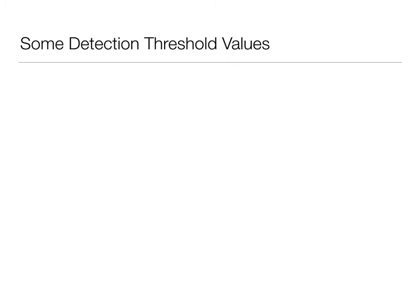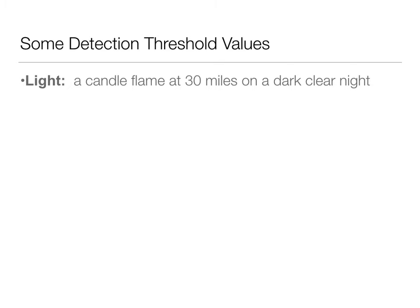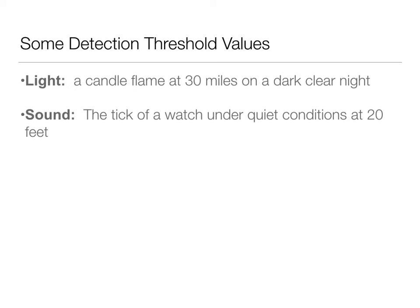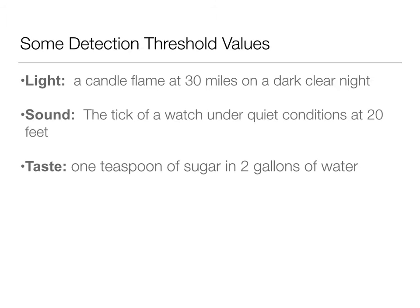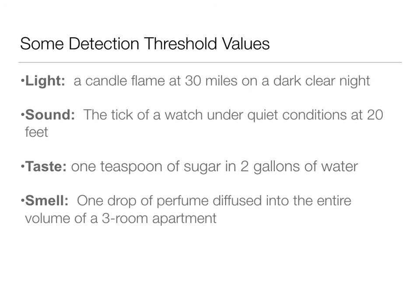We have different detection thresholds for different senses. For light, we're really good at it - on a clear dark night you can detect a single candle flame at 30 miles. For sound, you can detect the tick of a watch under quiet conditions at 20 feet. For taste, the threshold is a teaspoon of sugar in two gallons of water. For smell, one drop of perfume diffused into an entire three-room apartment.